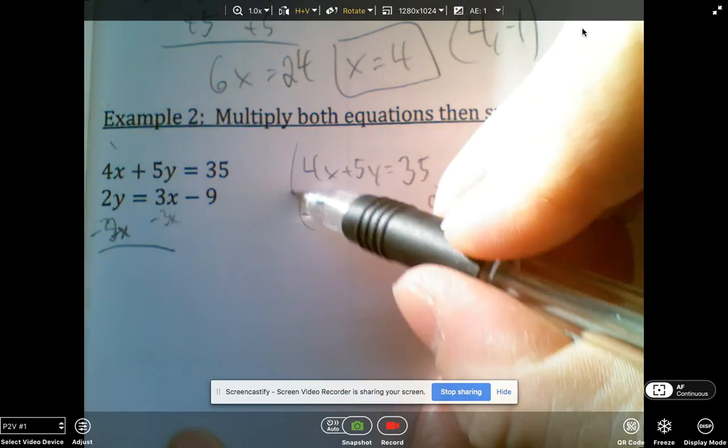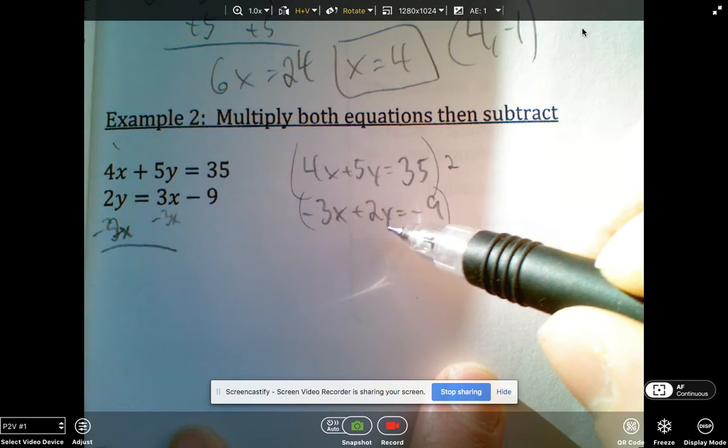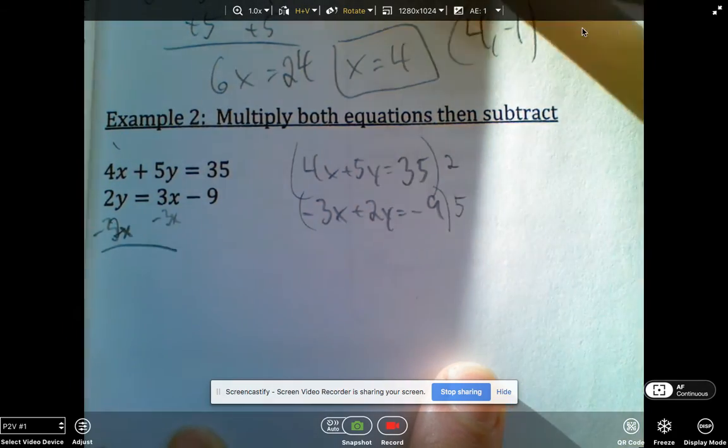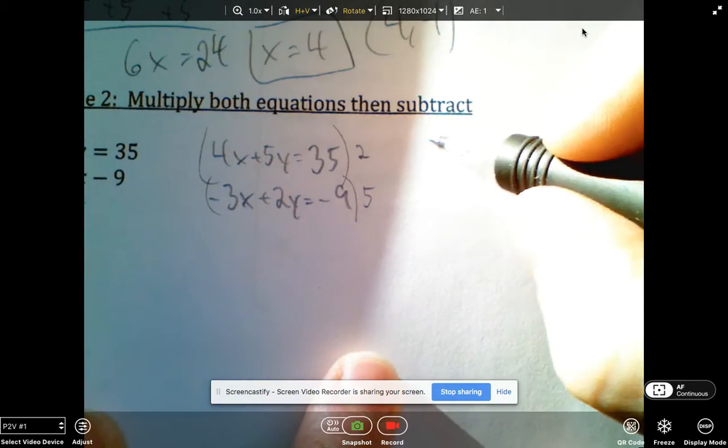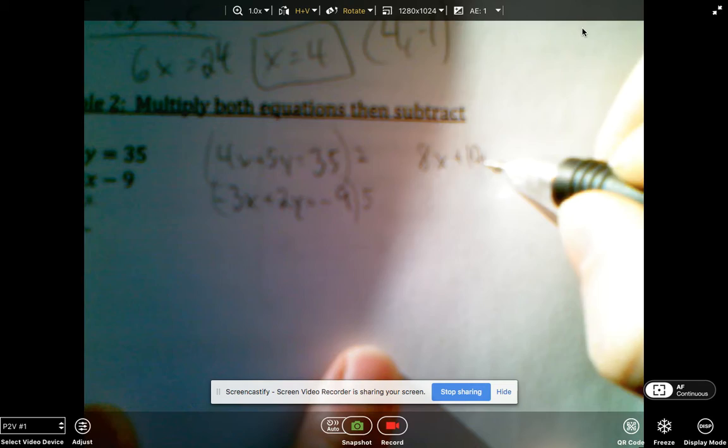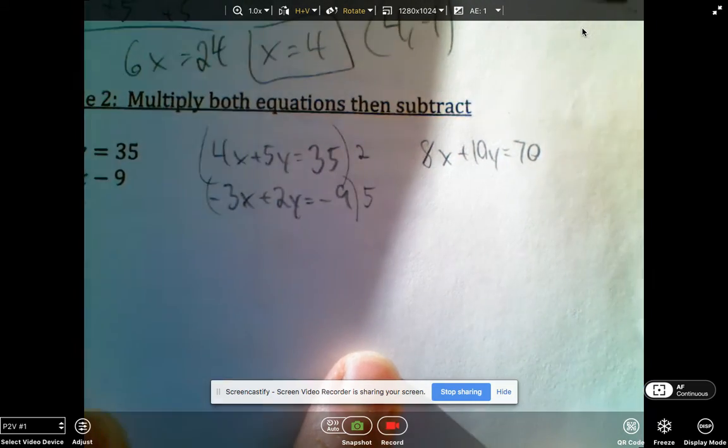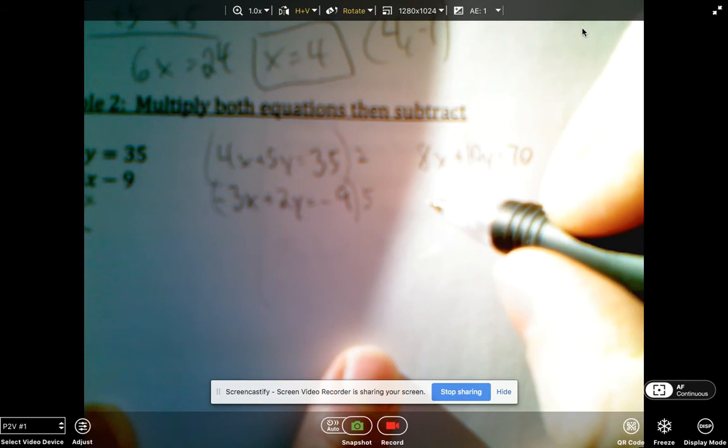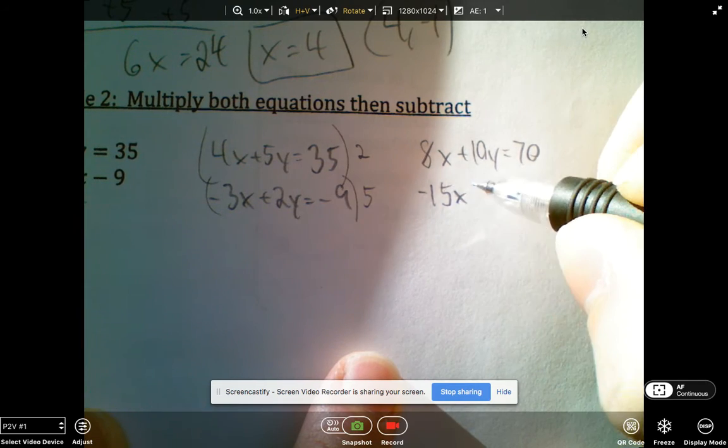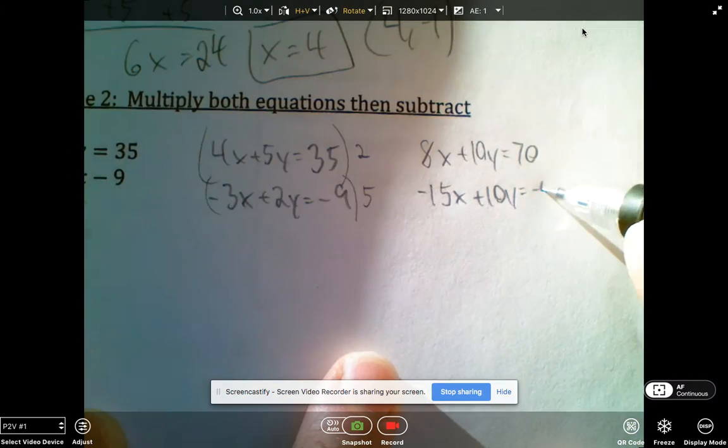To do that, I'm going to multiply the first equation by 2, and then I'll have to multiply this equation by 5. So my new equations will become 8x plus 10y equals 70, and then my second equation will become negative 15x plus 10y equals negative 45.